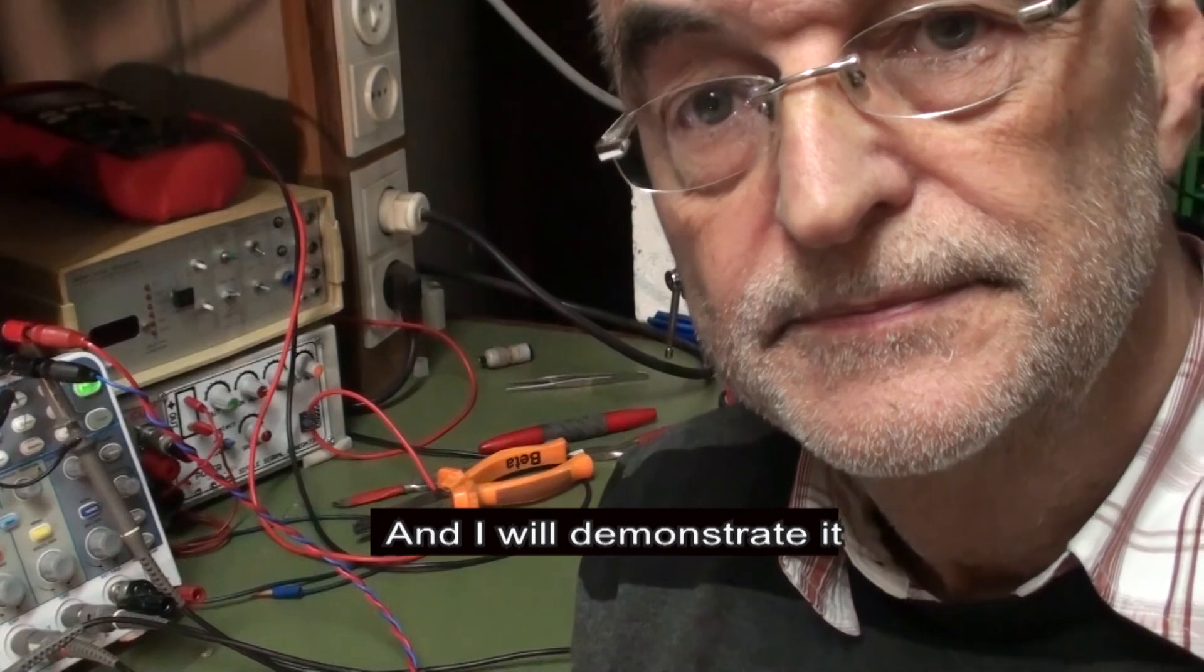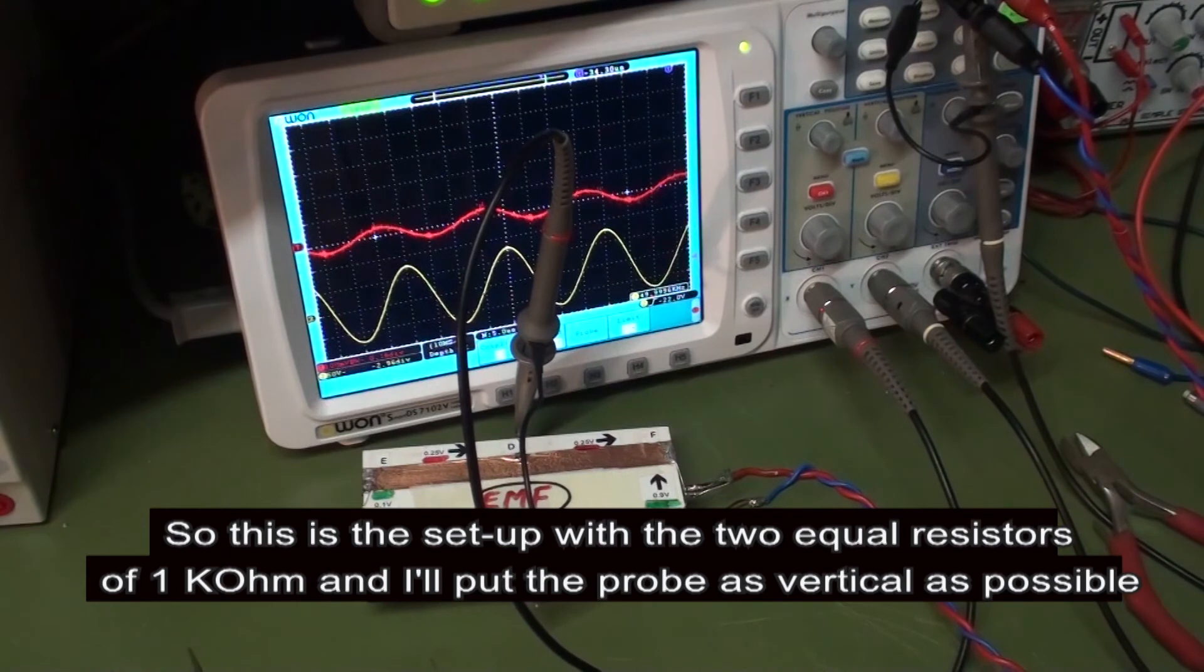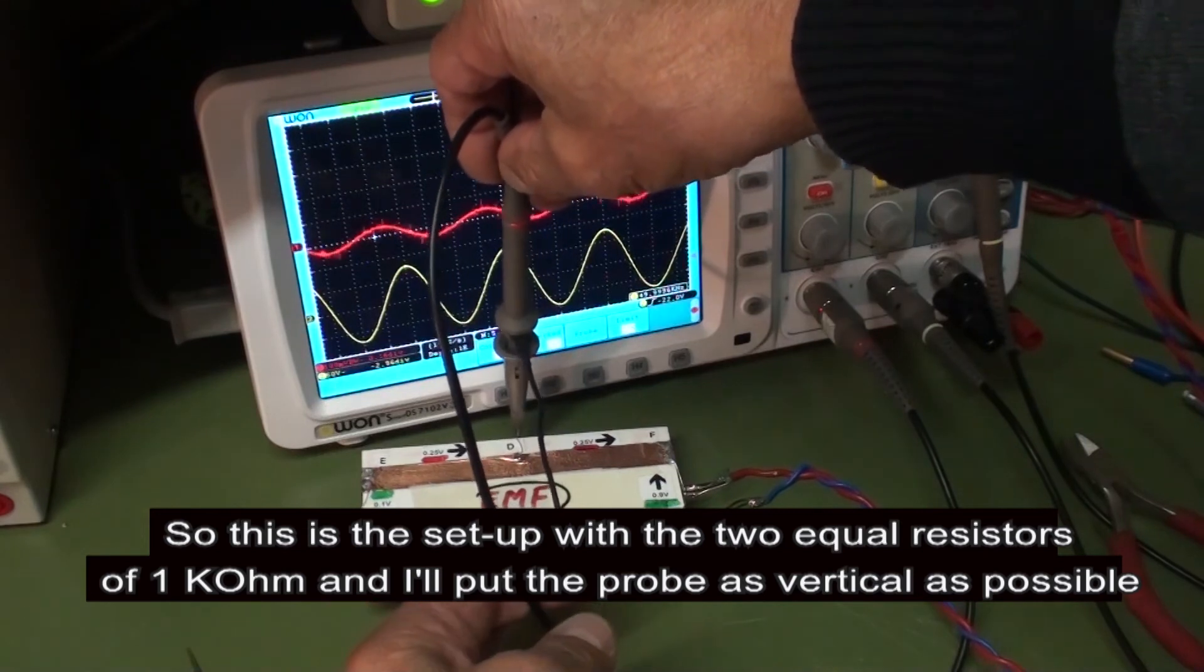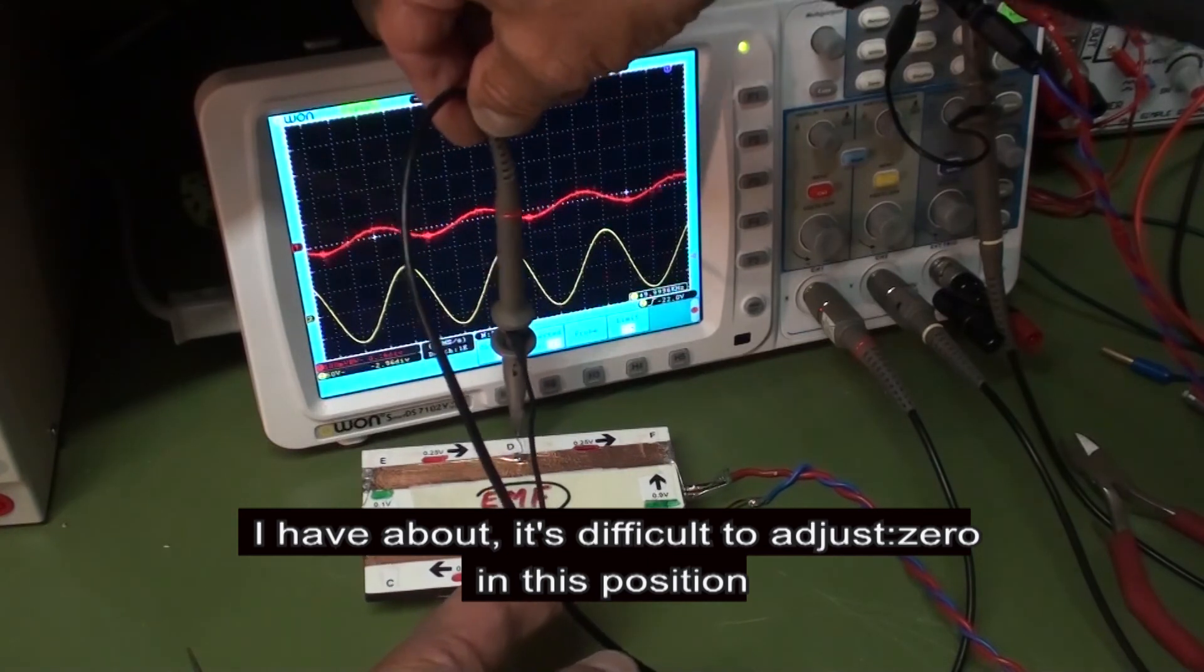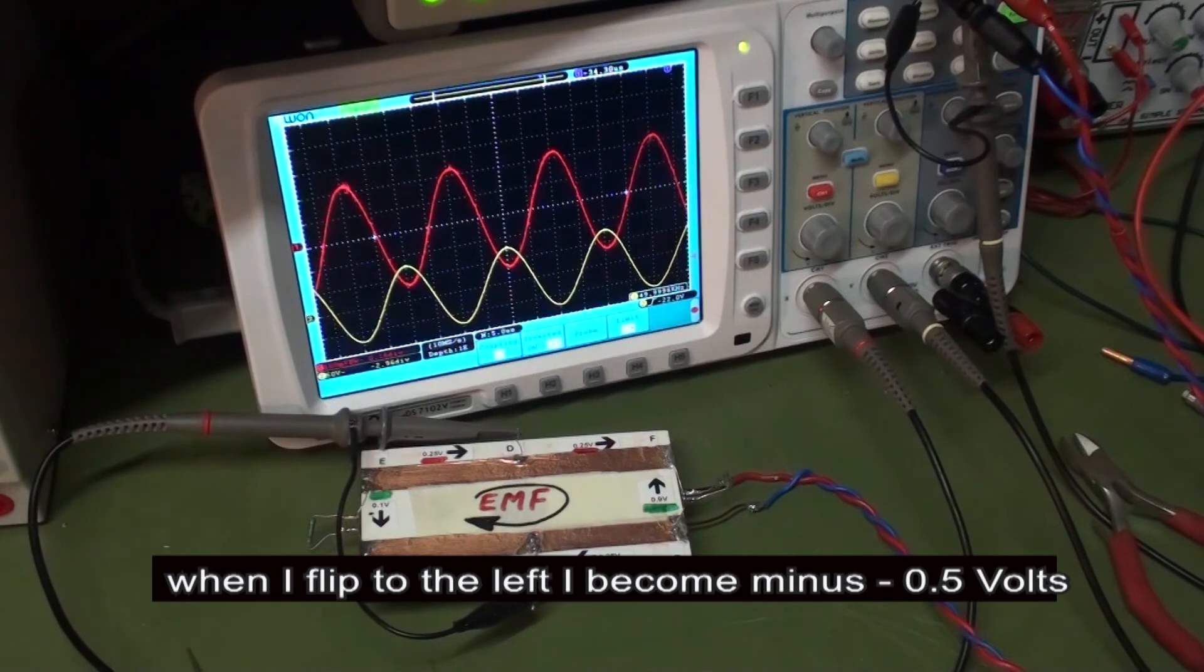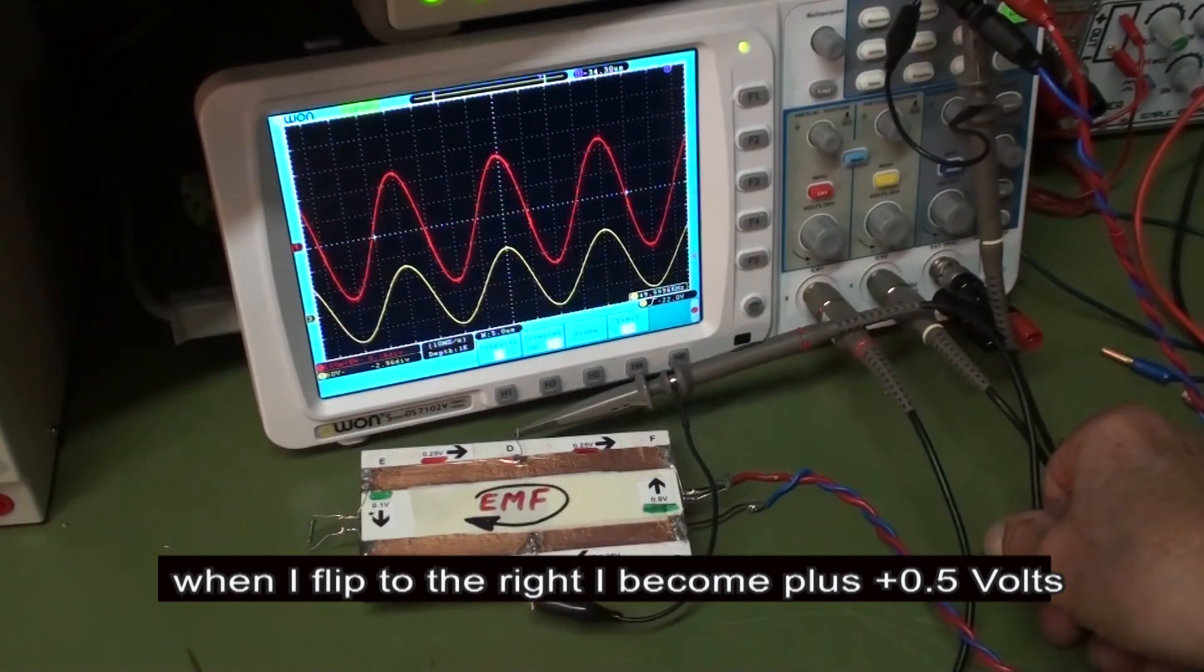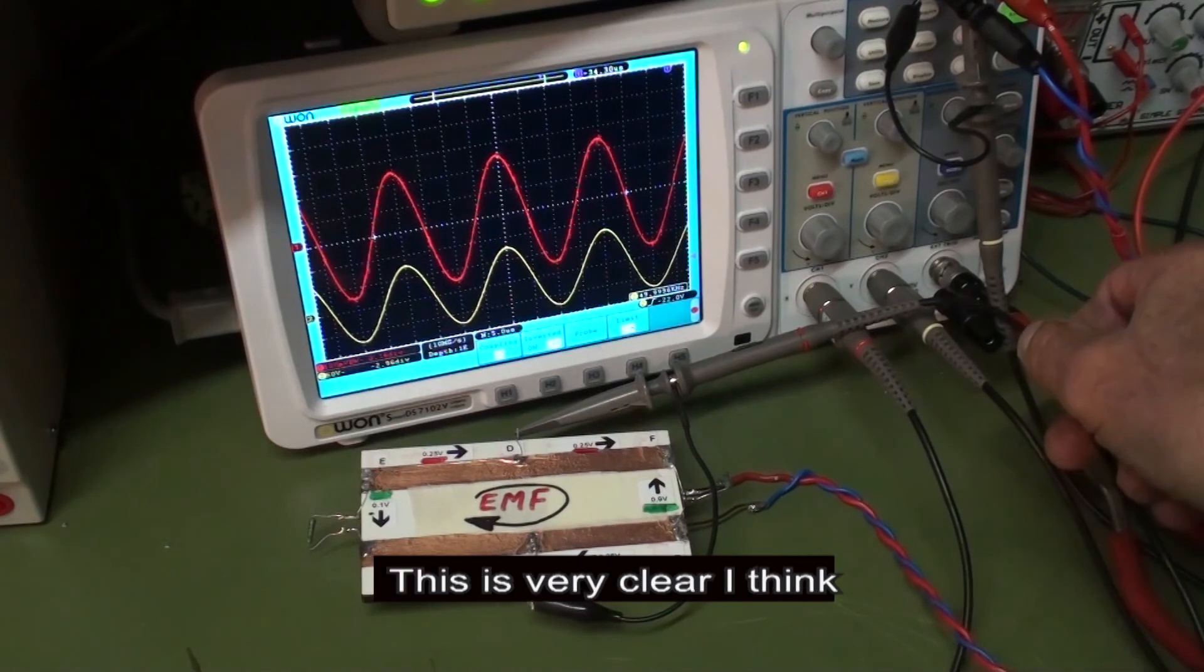And I will demonstrate it. So this is the setup with the two equal resistors of 1 kilo ohm. And I will put the probe as vertical as possible. And I will have about, it is difficult to adjust zero in this position. When I flip to the left, I get minus 0.5 volts. When I flip to the right, I get plus 0.5 volts. So this is very clear, I think.